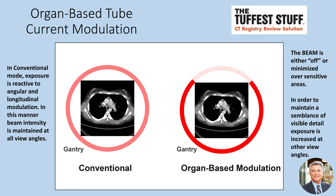In conventional mode, organ-based tube current modulation is reactive to angular and longitudinal modulation. Beam intensity is maintained at all view angles. That's why when you look at the diagram under conventional, tube current modulation is represented as even exposure in the entire circle or helix around the patient's body, meaning sensitive areas are getting exposed to just as much radiation as other lesser-sensitive areas.